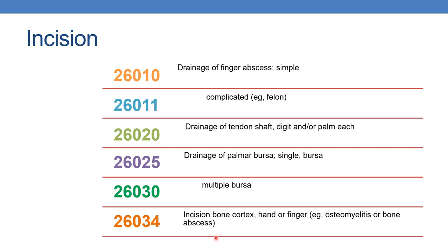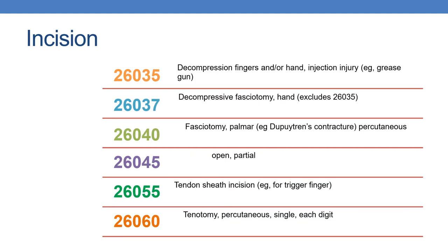Next is 26034, which is incision, bone cortex, hand or finger. The next CPT is 26035: decompression, fingers and/or hand, injection injury — for example, grease gun. The next is 26037: decompressive fasciectomy, hand, excludes 26035.